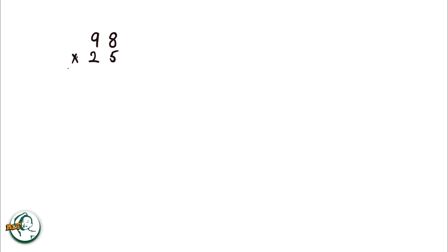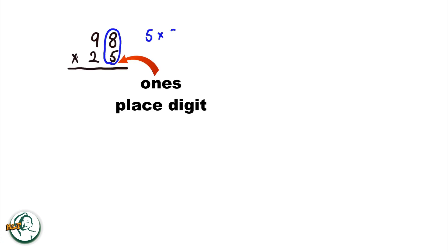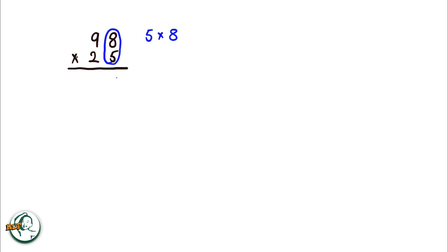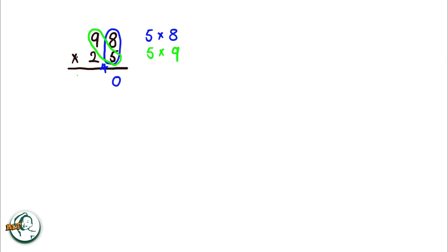Into another example: 98 times 25. Firstly, we'll start with the ones place digit, 5. We multiply 5 by 8, giving us 40. We write down the 0 and carry over the 4. Next, we multiply 5 by 9, resulting in 45. Adding the carried over 4, we get 49.